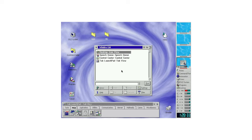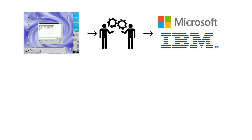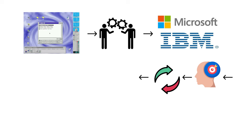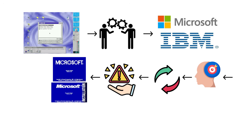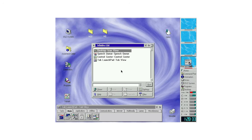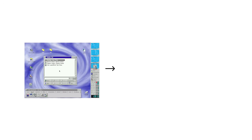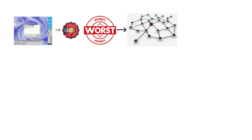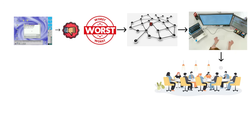IBM OS/2 was originally built as a joint project between IBM and Microsoft, intended to replace the limitations of the early Windows line with a more stable, more modern, and more professional-grade operating system. The partnership fell apart quickly, but not before IBM OS/2 inherited the worst possible combination: the complexity of a corporate engineering project and the marketing clarity of a committee meeting.